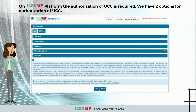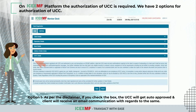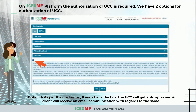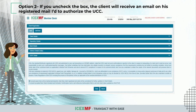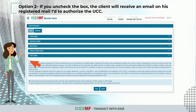There are two options for authorization of UCC. Option one: as per the disclaimer, if you check the box, the UCC will get auto-approved and the client will receive an email communication regarding the same. Option two: if you uncheck the box, the client will receive an email on their registered mail ID to authorize the UCC.